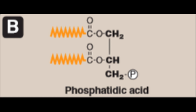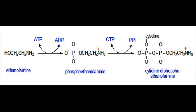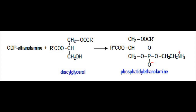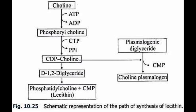Starting with the synthesis of phosphatidylethanolamine: ethanolamine attaches to phosphate to form phosphoethanolamine. Similar to UDP-galactose or UDP-glucose, we get cytidine diphosphoethanolamine (CDP-ethanolamine). Diacylglycerol serves as the backbone, and CDP-ethanolamine attaches to it, losing the CDP, to yield phosphatidylethanolamine.